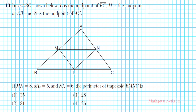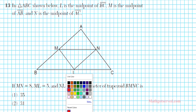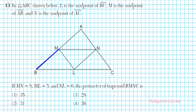Let's take a look at problem 13. In triangle ABC, L is the midpoint of BC, M is the midpoint of AB, and N is the midpoint of AC. If MN is 8, ML is 5, and NL is 6, the perimeter of trapezoid BMNC is what? So we're looking for the perimeter of trapezoid BMNC — let me highlight that so we don't get confused.